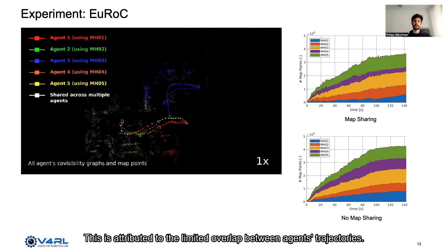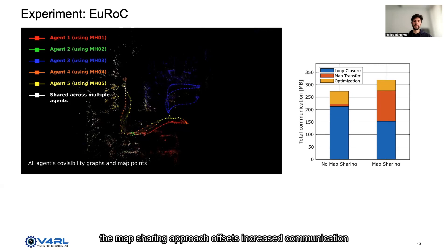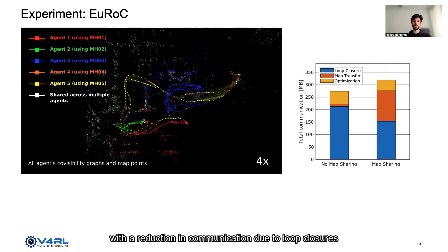In terms of communication requirements, the map sharing approach offsets increased communication due to map transfer with a reduction in communication due to loop closures as fewer keyframes are produced.